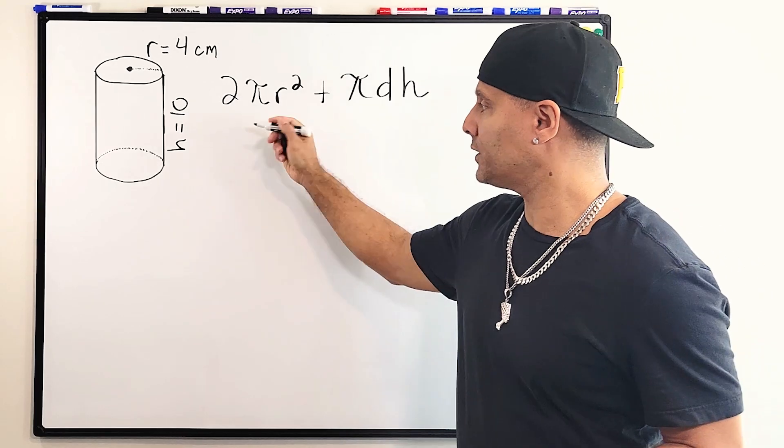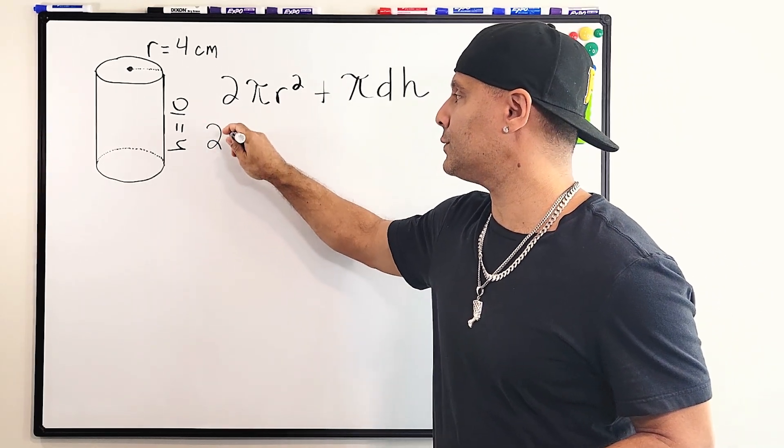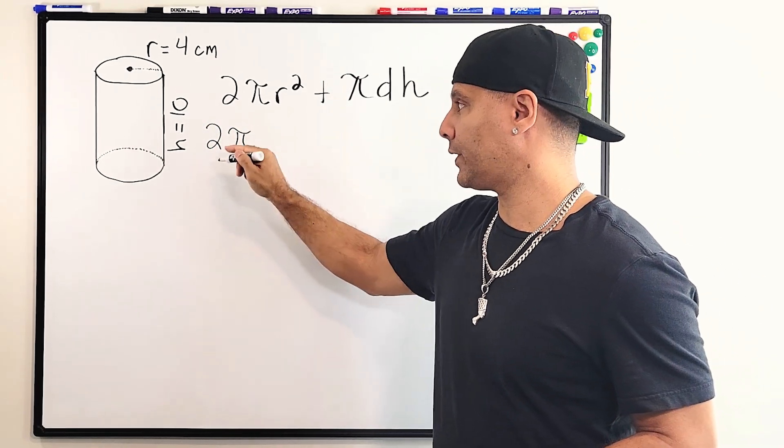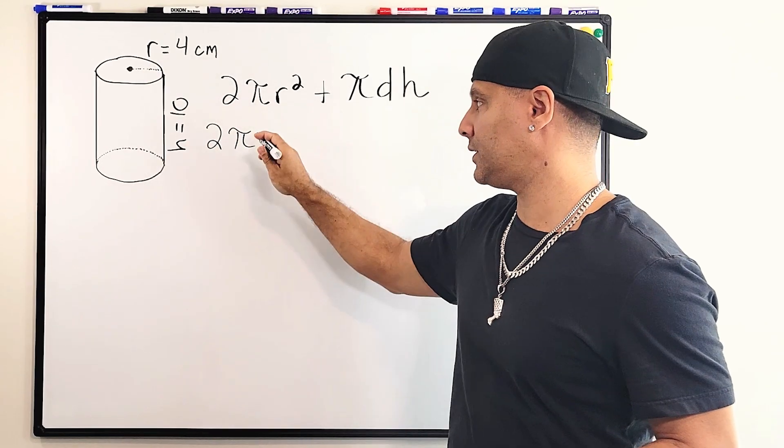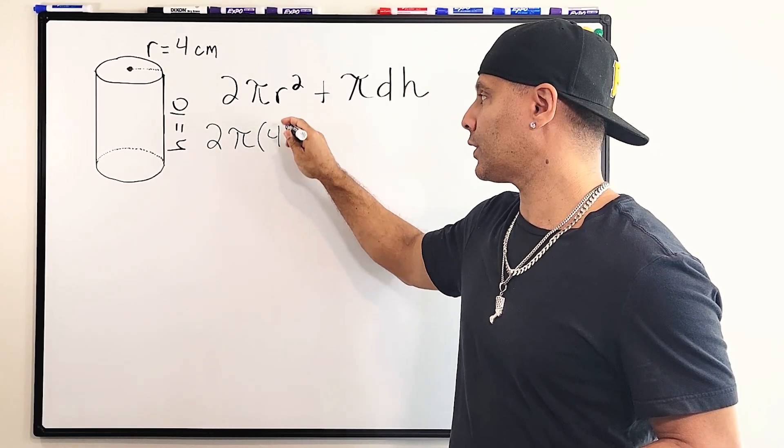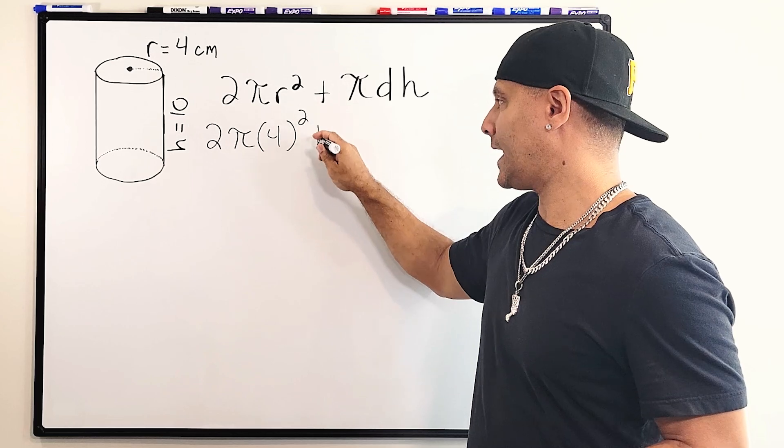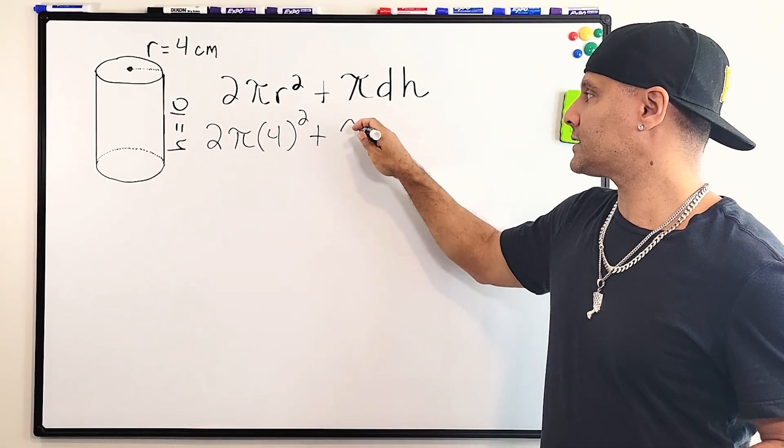So what I'm going to do is rewrite this formula as 2π, and the radius of our cylinder is 4 centimeters. So we're going to take 4 and square it and then we're going to add it to π times diameter.